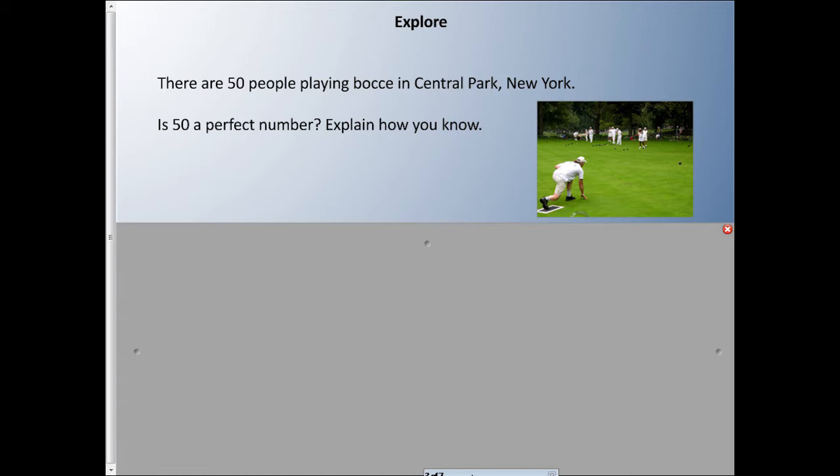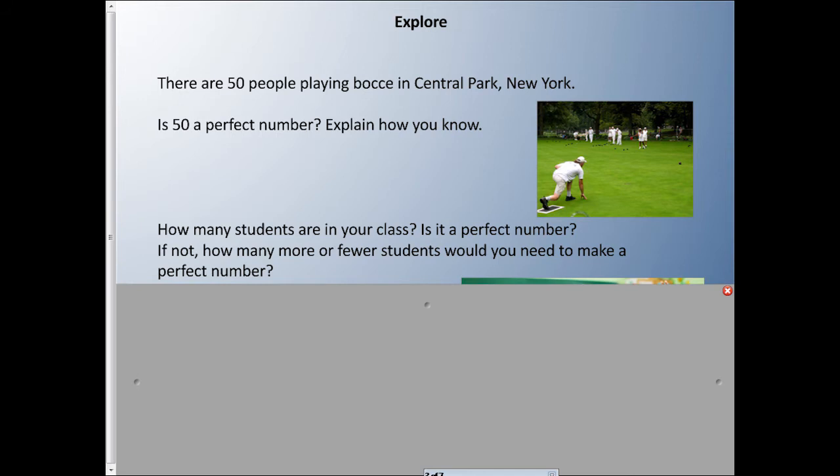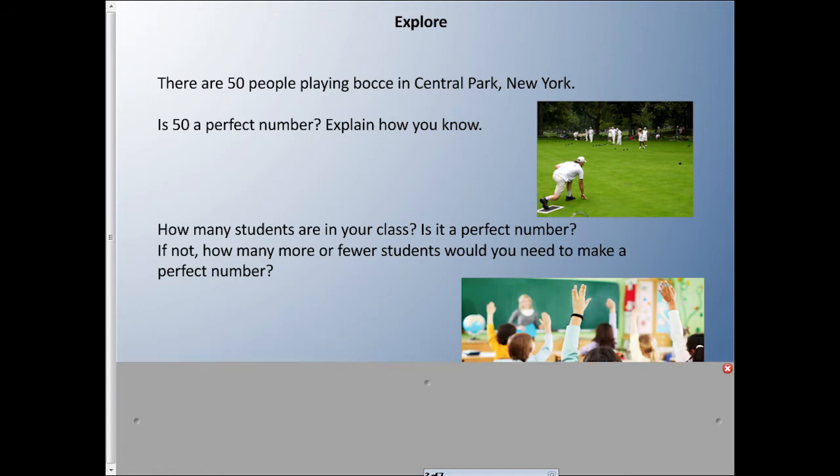I'll let you pause it there for a sec, try and figure out the factors of 50, see if they add up to 50 to indicate that it is a perfect number or not. How about this: how many students are in your class? Is it a perfect number? If not, how many more or fewer students would you need to make it a perfect number? Let you pause and do that for a sec.